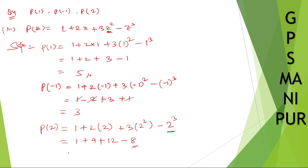I hope I'm not confusing you — it's just simple, not that complicated. So 1 plus 4 is 5, 5 plus 12 is 17, 17 minus 8. If you do the calculation you get — no, no — 17 minus 8 is 9. Your answer is 9.